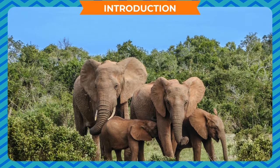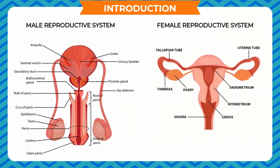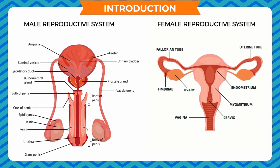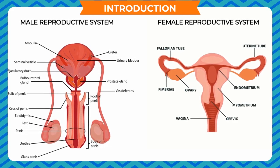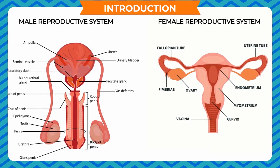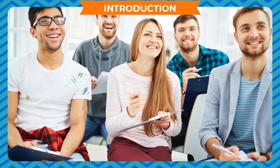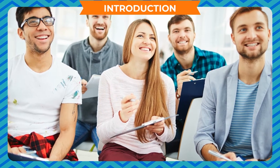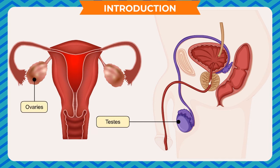There follows in all mammals a period in which the gonads — reproductive glands of both sexes — are inactive until they are activated by gonadotropins, hormones from the pituitary, to bring about the final maturation of the reproductive system. This period of final maturation is known as adolescence. It is also called puberty.